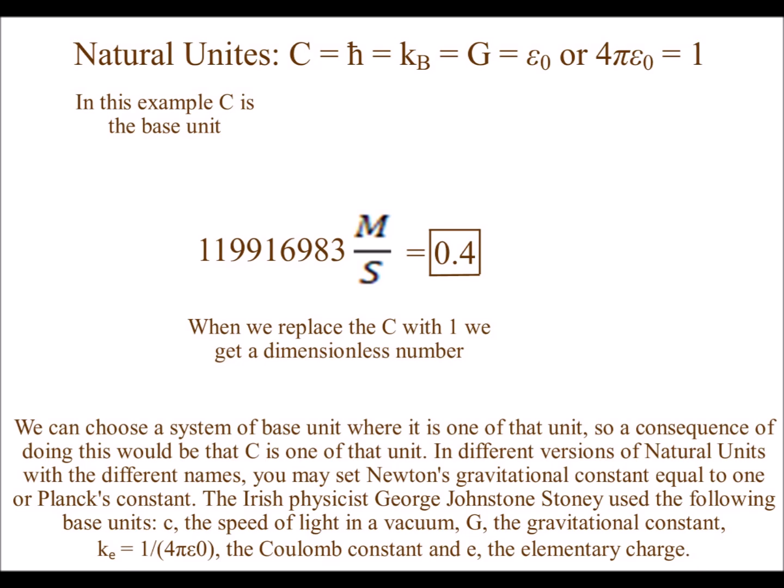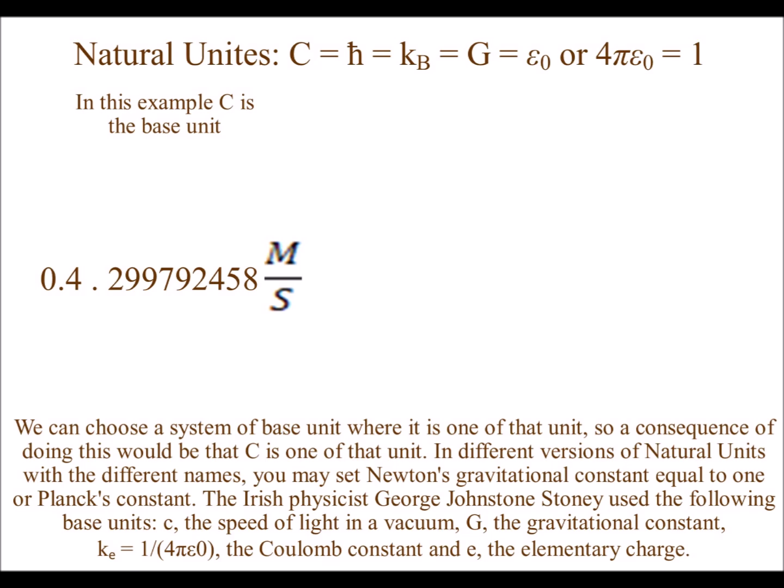There is information lost in the sense that you cannot say which quantity the value of 0.4 represents. But the moment you tell me that 0.4 is a speed, I can say alright, a speed would be meters per second in SI units, and a constant c can be expressed in these units. So we do just that and multiply by 0.4.